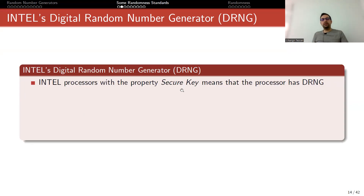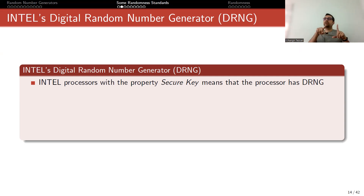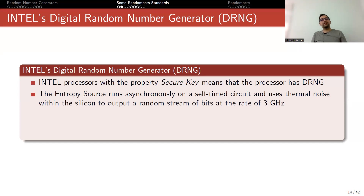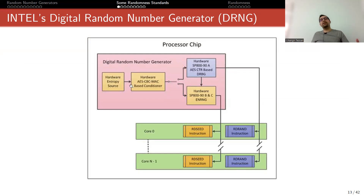Intel processors with the 'Secure Key' property have a digital random number generator. Intel has a web page at ark.intel.com where you can search your CPU model and see its properties. At the bottom there is a line saying 'Secure Key,' and if it says yes, you have this random number generator on your CPU. The entropy source runs asynchronously on a self-timed circuit and uses thermal noise within the silicon to output a random stream of bits at the rate of 3 gigabits per second — generating zeros and ones very quickly. This may not satisfy the uniformity property, which is why it puts the output into AES encryption: the ciphertext will have uniform statistical behavior.